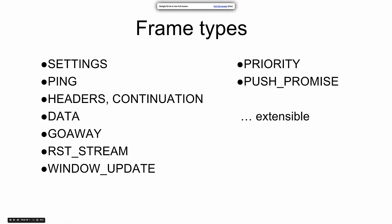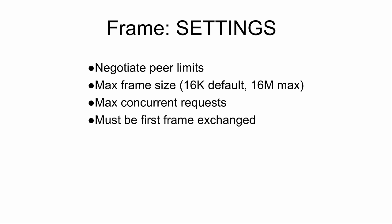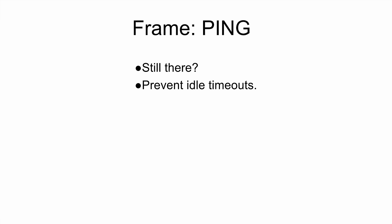The different types of frames in HTTP2: there are settings, pings, and others we'll go through. The settings frame lets the two sides — client and server — exchange what their capabilities are; this is how things are upgradable. Ping lets either side say, 'Are you still there?'